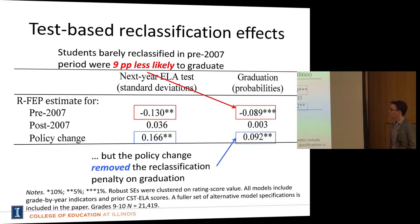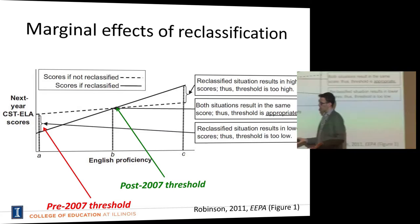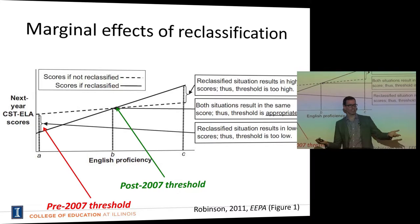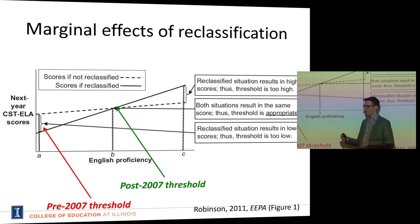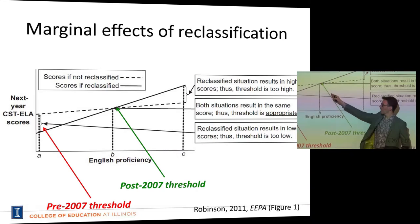Putting this back into the theoretical framework from the earlier paper: when LAUSD and California had the lower criteria in the pre-2007 period, we were down here at a lower threshold with a negative effect of reclassification. Then they raised the criteria and made it more difficult to get reclassified. We're now very close to a null effect of reclassification, not only on next year's achievement test but also on graduation outcomes.